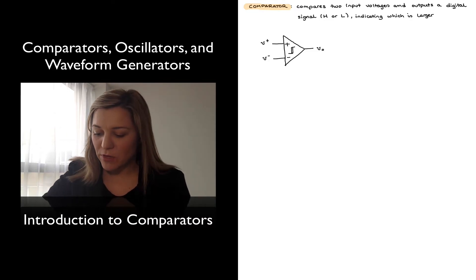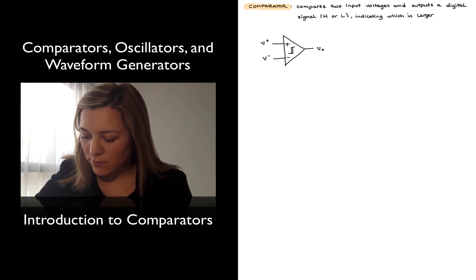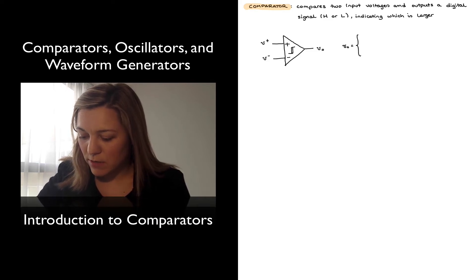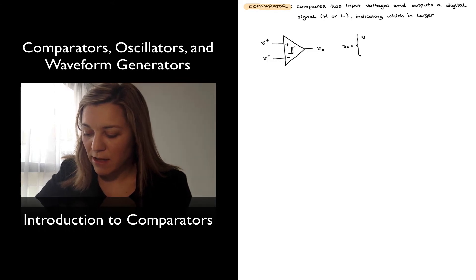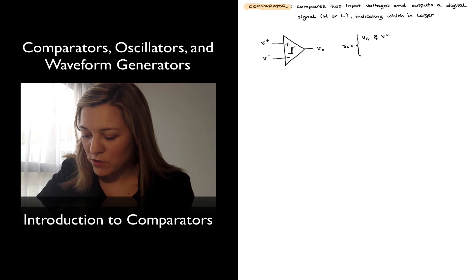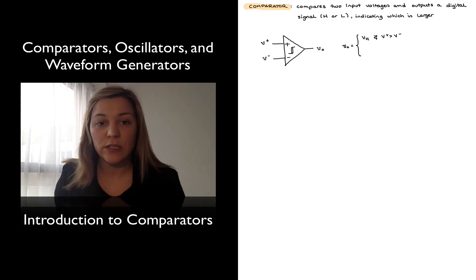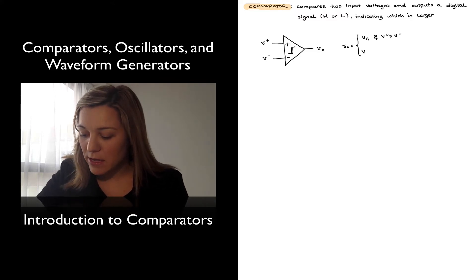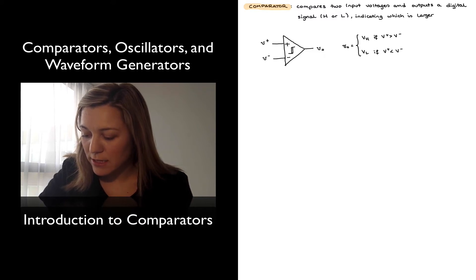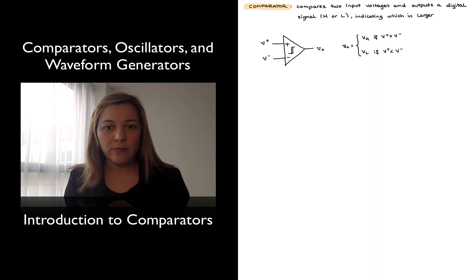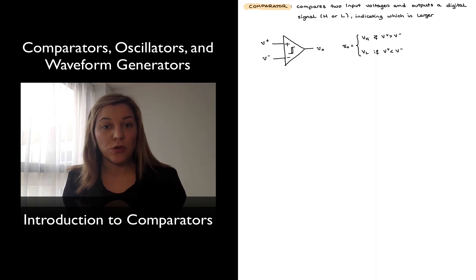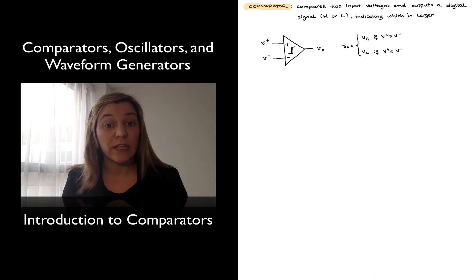Or vice versa. So essentially, mathematically, we could write that V out is equal to V high if the positive input terminal is at a higher voltage than the negative input terminal, and V low if the positive input terminal is at a lower voltage than the negative input terminal. This is in sharp contrast to a regular op-amp, which is meant to be operated in the linear region.